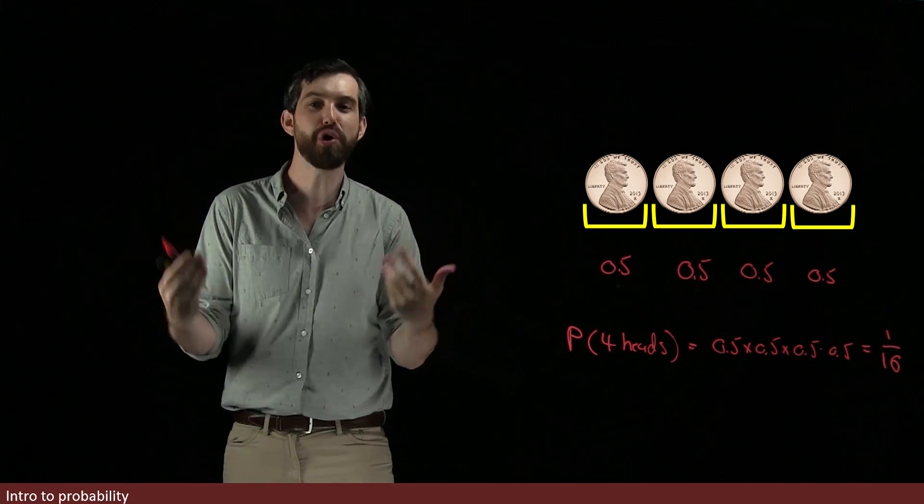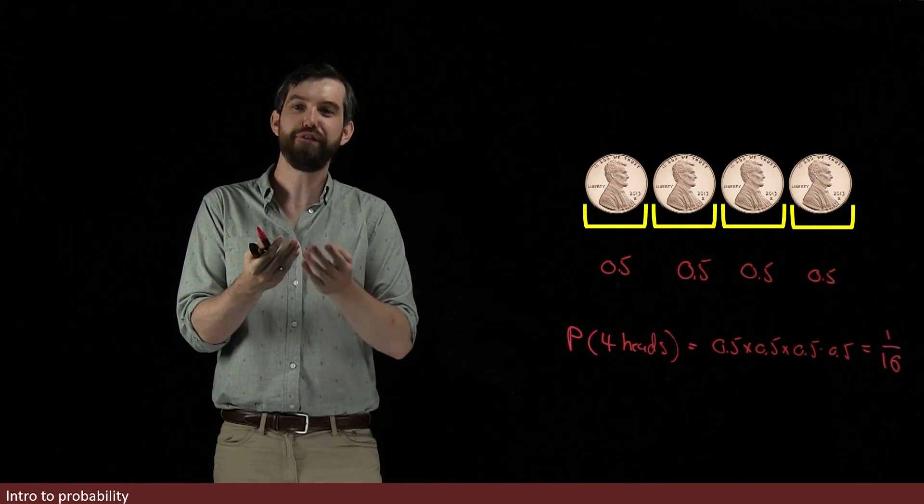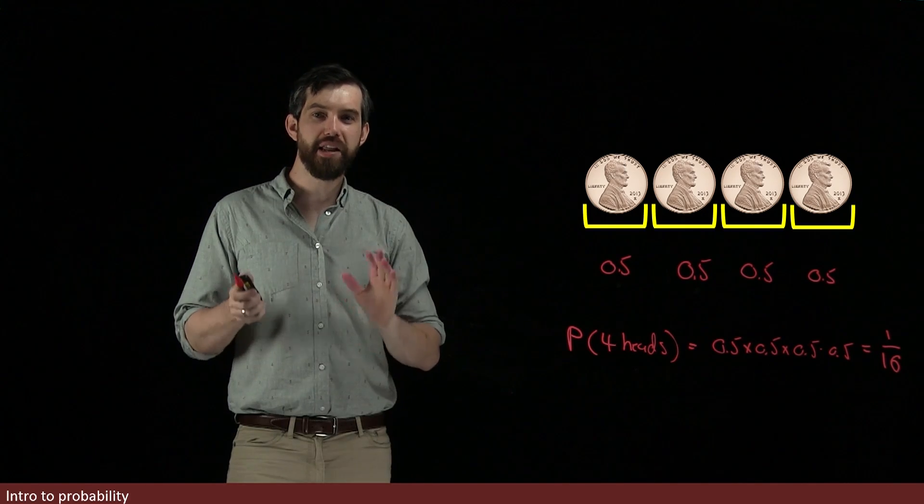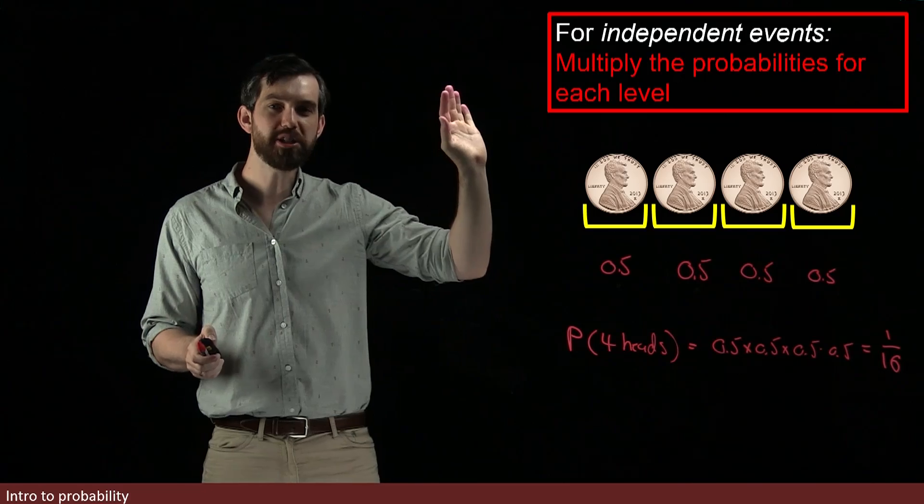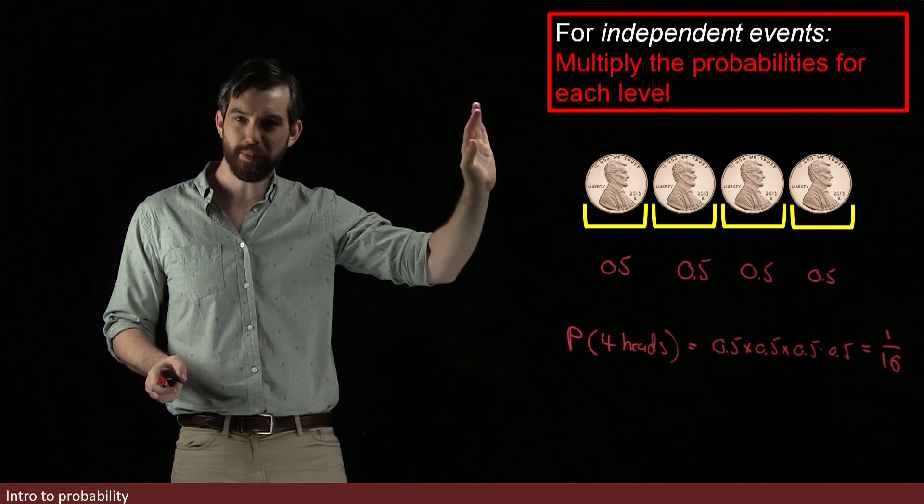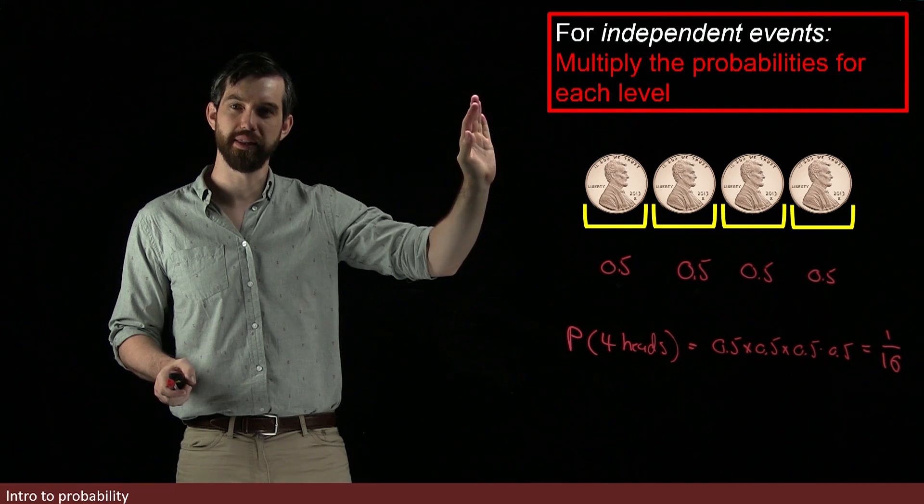And therefore, we're going to say that for a fair coin like this, the flips are all independent. Their probabilities don't depend on each other. And in that scenario, we're going to have the multiplicative rule that for independent events, we're multiplying the probabilities for every level.